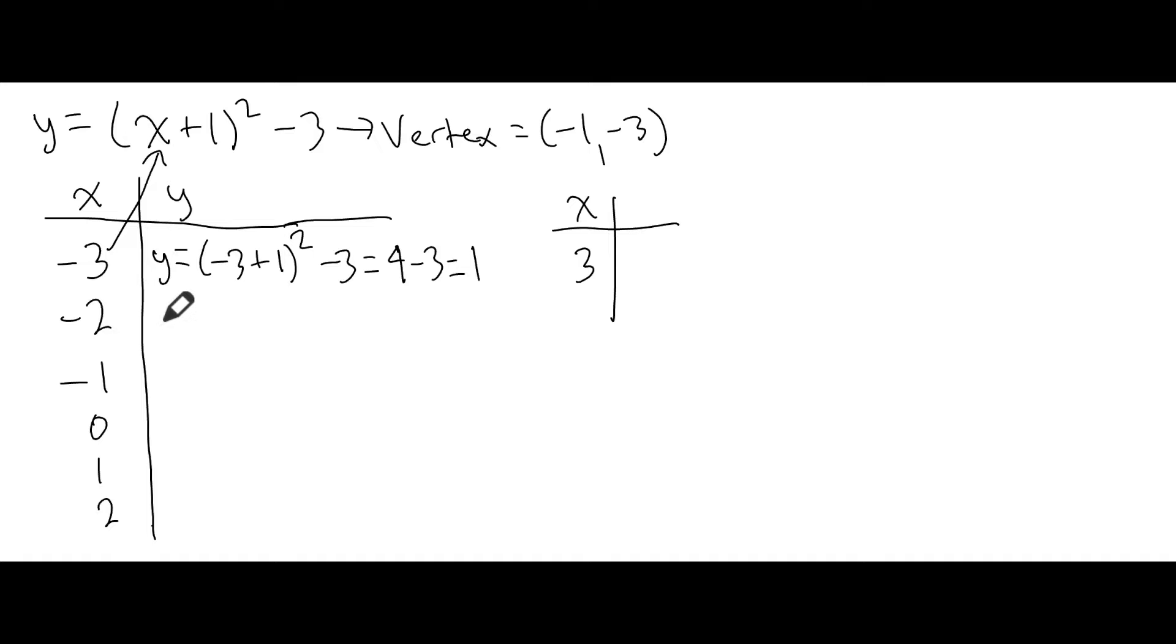Now for our next variable, for -2, we're going to do the exact same thing. We'll take -2 and replace the x with -2. So we have (-2 + 1)² - 3. That gives us -2 + 1, which is -1. And -1 squared is 1, then we take away the 3. That gives us a total answer of -2.